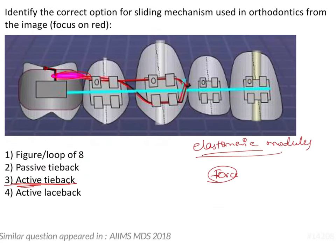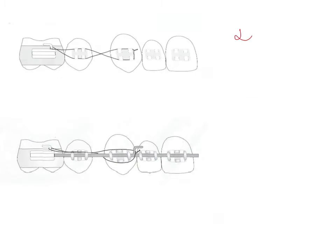The other options are figure of 8, passive tie back, and active lace back. However, lace backs are only passive — there is nothing known as an active lace back, because there is no elastic module present when we give a lace back.